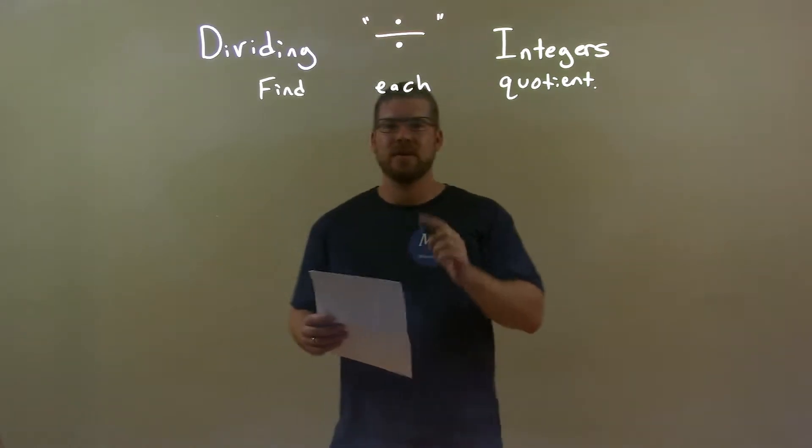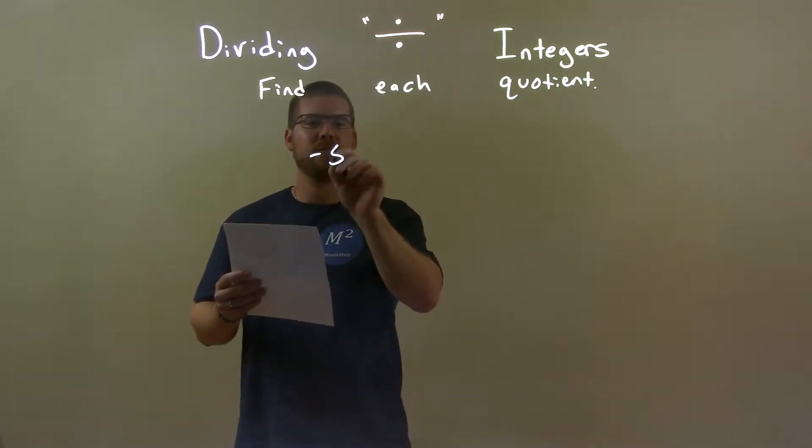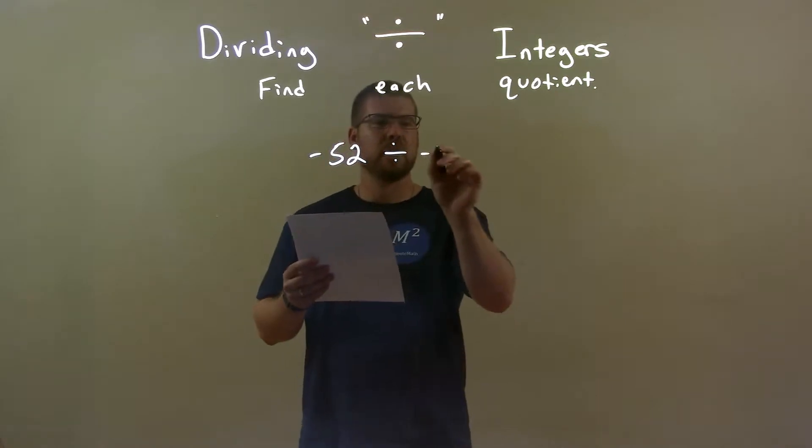So, if I was given these numbers, negative 52 divided by negative 4.